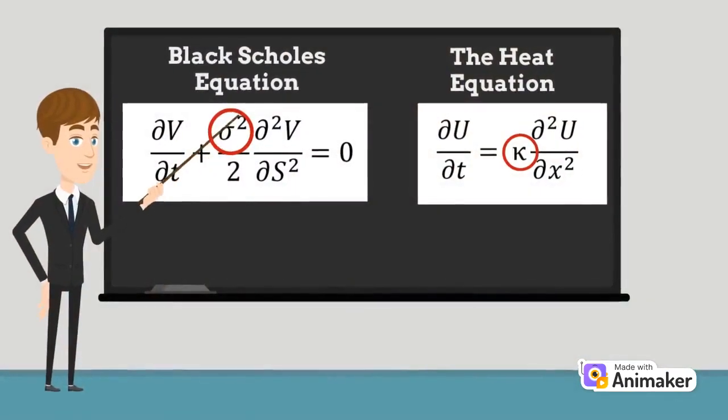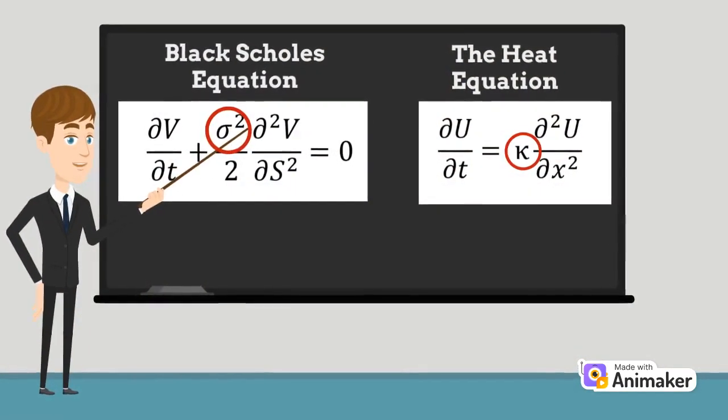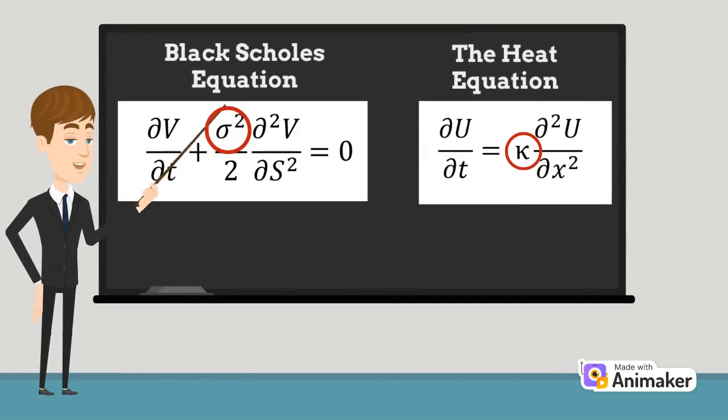Both the volatility and the thermal diffusivity can be seen as analogous, due to the fact that both variables represent a degree of uncertainty or variability.